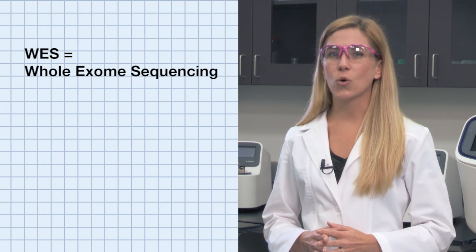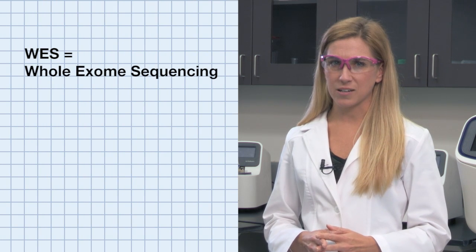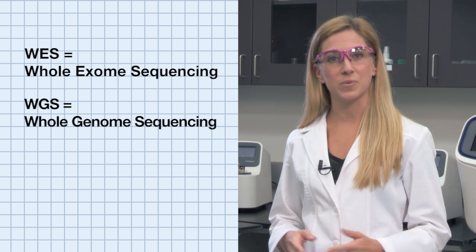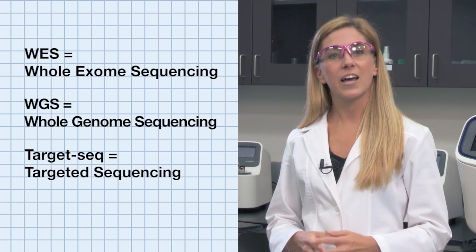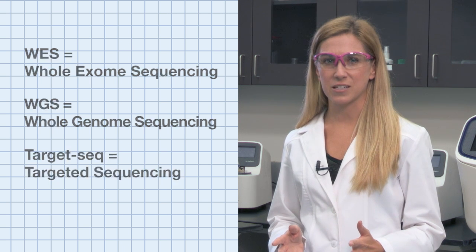Most of you already know the acronyms DNA and RNA. But in the next-generation sequencing world, there is a whole lot more. When you are starting to think about your next sequencing experiment, people may ask: are you doing WES, WGS, or TargetSeq? WES is whole exome sequencing, WGS is whole genome sequencing, and TargetSeq is targeted sequencing.